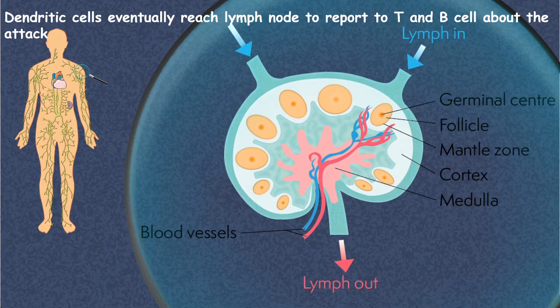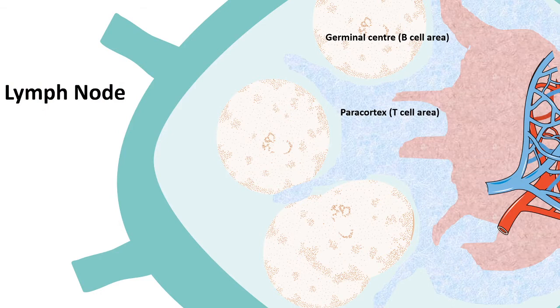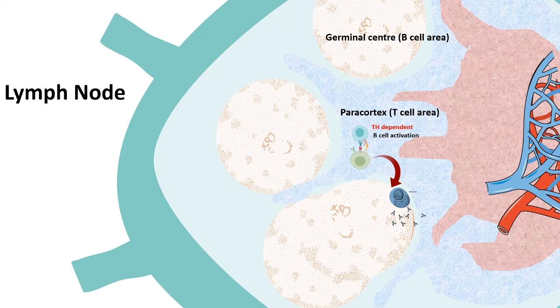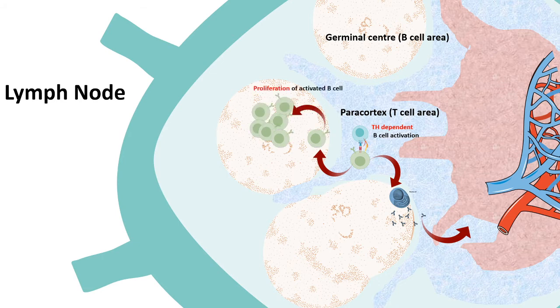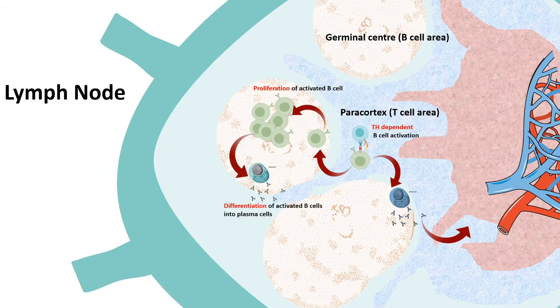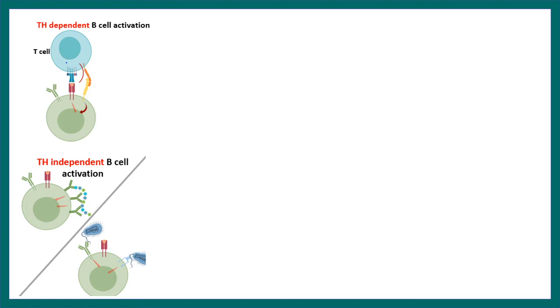Inside the lymph node, there are dedicated regions where you find T cells and B cells. These dendritic cells can activate T cells and thereby activate B cells. Or, depending upon the bacteria, the bacteria can itself activate B cells directly via endotoxins. We'll learn about both. In this example, a T cell is activated by the dendritic cell and then activates several B cells. There could be activation of B cells either in a T cell-independent manner or a dependent manner.